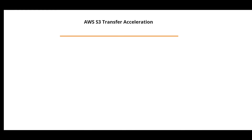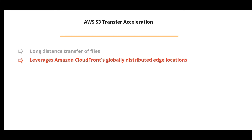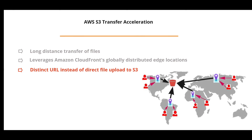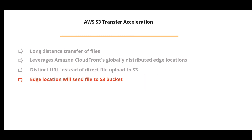Another service is S3 Transfer Acceleration, which enables fast, easy, and secure transfer of files over long distances between your client and an S3 bucket. It utilizes the CloudFront edge network to accelerate uploads to S3. Instead of uploading directly to S3, you get a distinct URL that routes data to the nearest edge location, which then sends the file to the S3 bucket. Transfer Acceleration can speed up content transfer by as much as 50 to 500 percent for long-distance transfers.